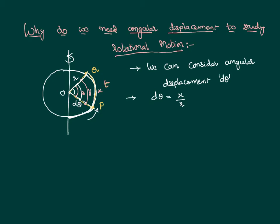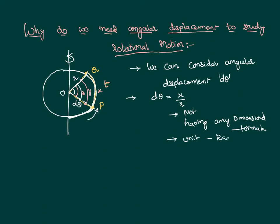Angular displacement is the ratio of similar physical quantities — displacement by displacement, x by r — therefore it does not have any dimensional formula. It is dimensionless because it is the ratio of similar physical quantities. However, it does have a unit: angle is measured in radians. So angular displacement is one of those physical quantities that has no dimensional formula but has a unit of radian.